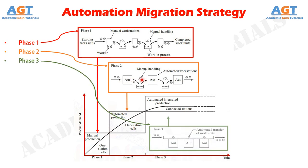Phase 3: Automated integrated production using a multi-station automated system, with serial operations and automated transfer of work units between stations. When the company is certain that the product will be produced in mass quantities and for several years, then integration of the single station automated cells is warranted to further reduce labor and increase production rate.